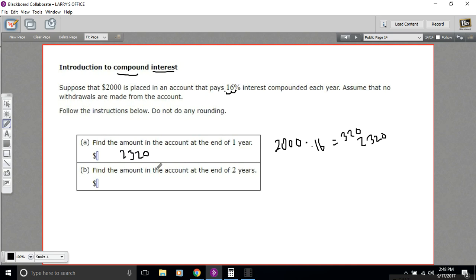Now our second year, it says find the amount in the account at the end of two years. Our second year, we're going to take 16 percent not of $2000 but of $2320.